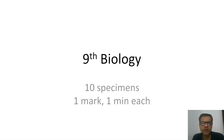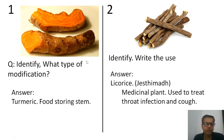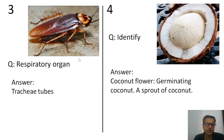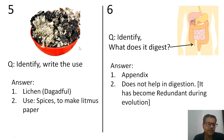For 9th standard biology: 10 specimens, one mark and one minute each. First specimen: identify and write the type of modification — it is turmeric (halakunda), a food-storing stem. It is a stem because it shows nodes and internodes; even though below ground, it is a stem not a root. Second: identify and write the use — it is licorice (jashtimadh), a medicinal plant used to treat throat infections and cough. Next: respiratory organ — insects like cockroach have tracheal tubes. A coconut was kept — it is a germinating coconut sprout. A lichen sample (daggad phul) was kept — it is used as a spice and also to make litmus paper. A chart with an arrow was kept — the organ is the appendix; it does not help in digestion and has become redundant during evolution.